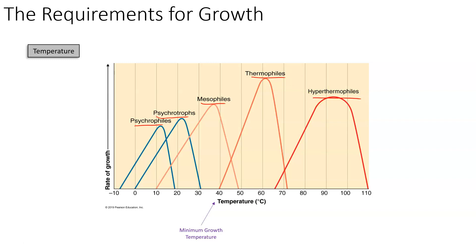All bacteria, regardless of what group they're in, have a minimum growth temperature, an optimum growth temperature, and a maximum growth temperature. In this particular example, we're talking about thermophiles — heat-loving bacteria. According to this graph, thermophiles have a minimum growth temperature of 40 degrees Celsius, an optimum of about 61 to 62 degrees, and a maximum of about 70 to 73 degrees Celsius.